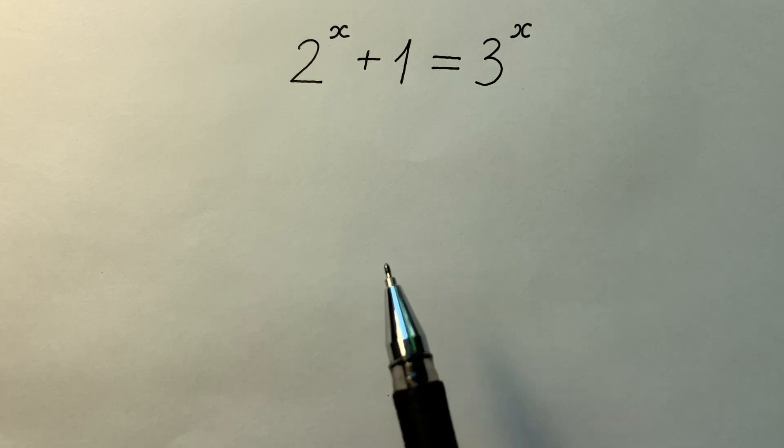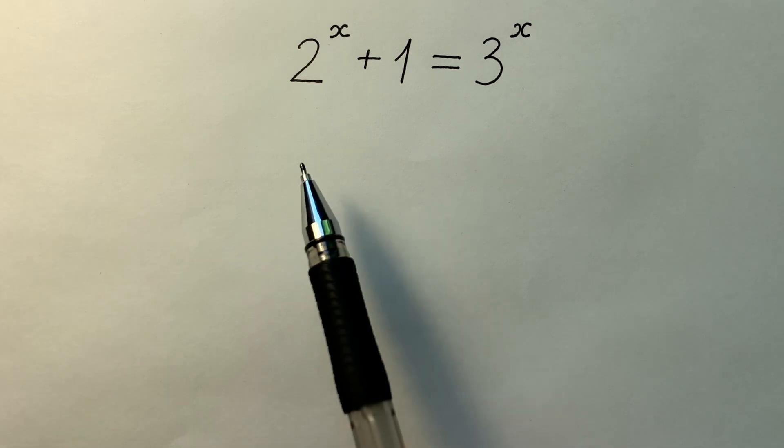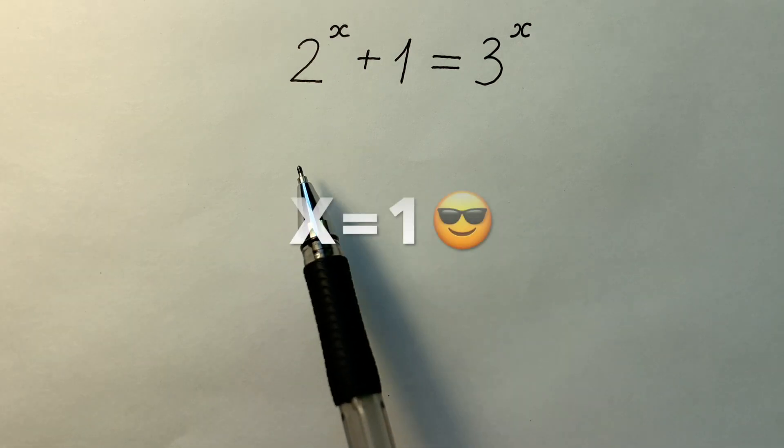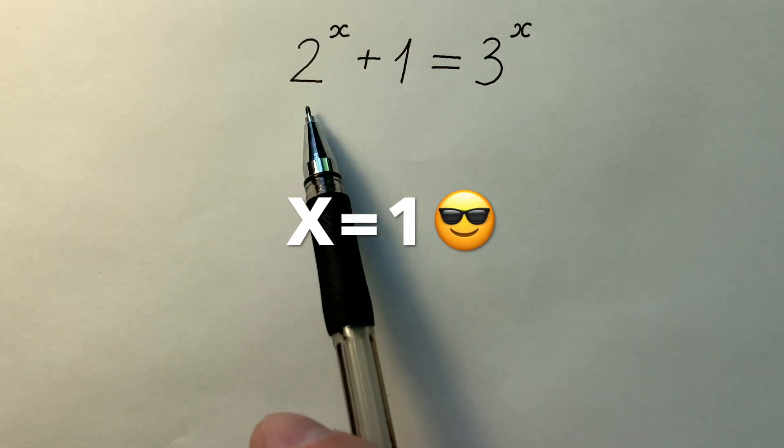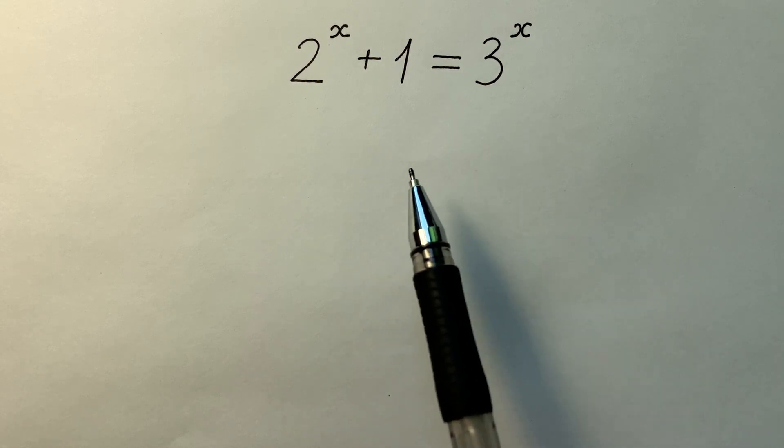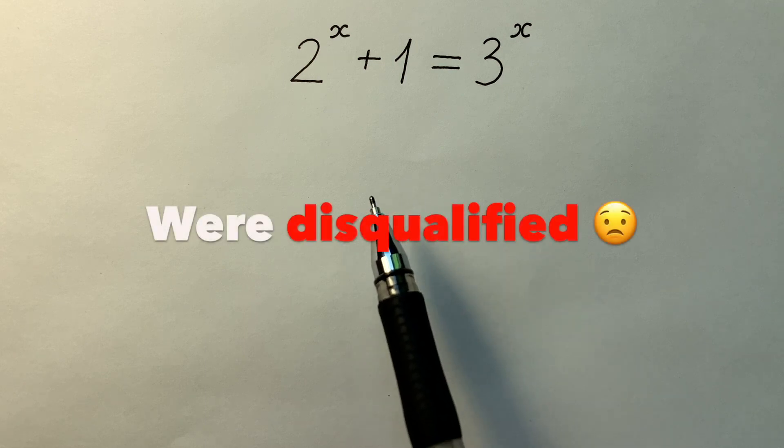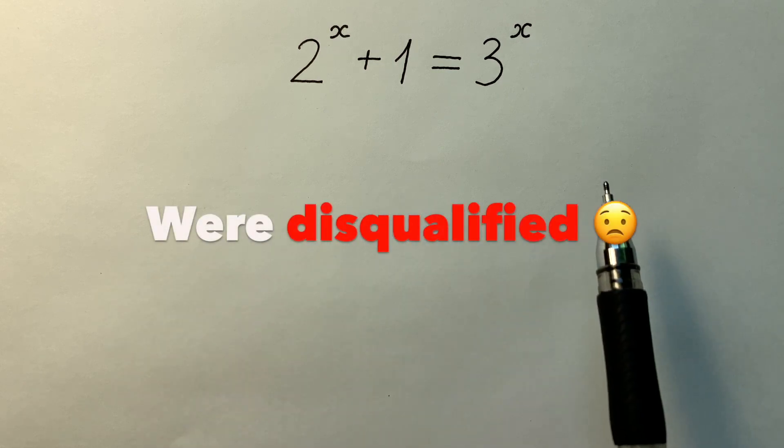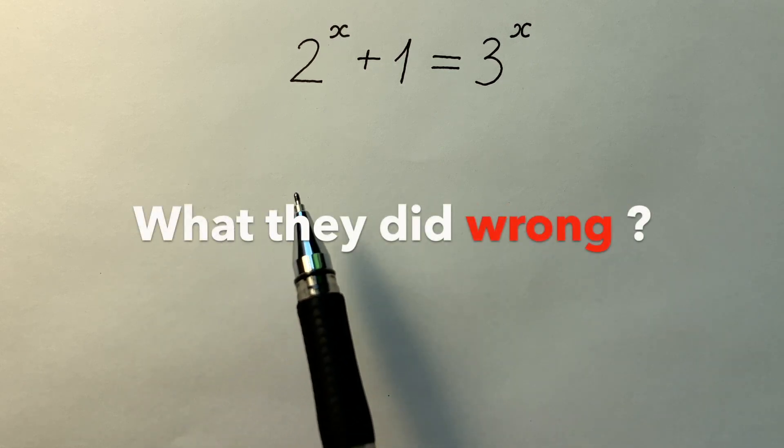This equation was given in an oral math exam at some prestigious universities. And when applicants said that x equals 1 and 2 plus 1 equals 3 this way, without any explanations they got 0 points and were disqualified immediately. But what did they do wrong?